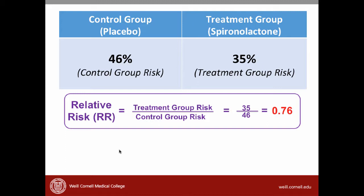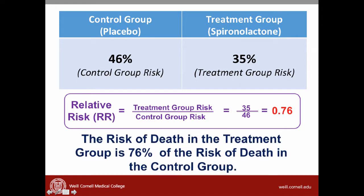The next term is the relative risk — simply the ratio of the risk for the treatment group over the risk for the control group. For this paper, that is 35% divided by 46%, which gives a relative risk of 0.76. In plain language, we might say the risk of death in the treatment group is 76% of the risk of death in the control group.